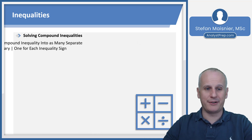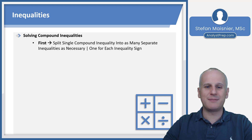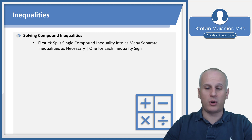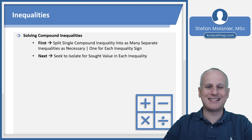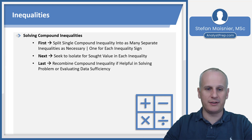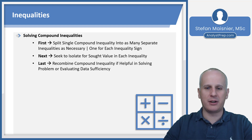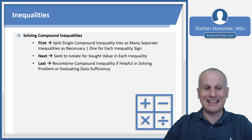Compound inequalities: first, split the compound inequality into as many separate inequalities as necessary — one for each inequality sign. Then seek to isolate the sought value in each individual inequality. Recombine your compound inequality if that's helpful to solve the problem or evaluate a data sufficiency question in the data insights section.